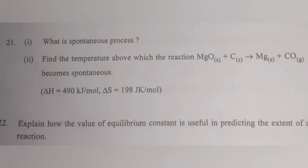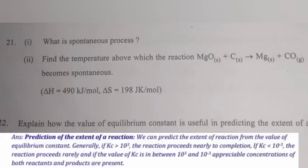Question 22: Explain how the value of the equilibrium constant is useful in predicting the extent of a reaction. Answer: We can predict the extent of a reaction from the value of equilibrium constant. Generally, if Kc > 10³, the reaction proceeds nearly to completion. If Kc < 10⁻³, the reaction proceeds rarely. If the value of Kc is between 10³ and 10⁻³, appreciable concentrations of both reactants and products are present.